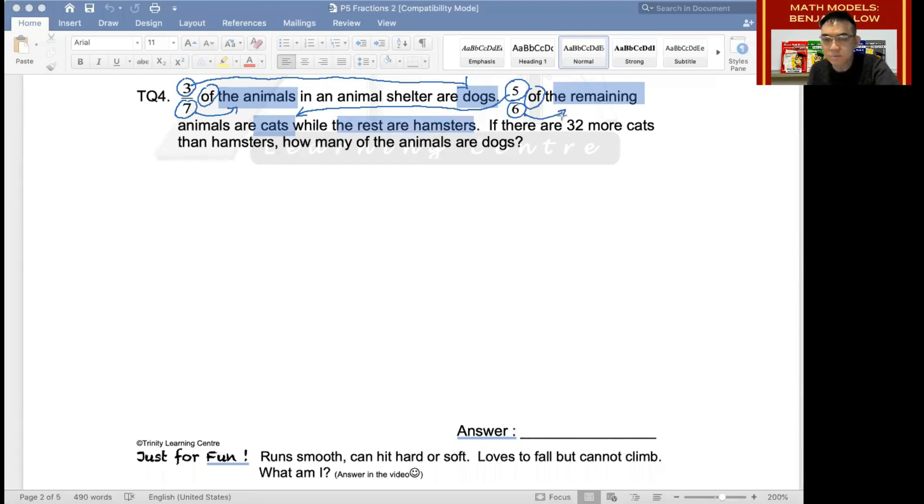Let's point that to the cats. And of course, we have to highlight that the rest are hamsters. All right, what's the next keyword? 32 more cats than hamsters? Question, how many dogs? All right, so now I'm going to begin with my model. Can you tell me how many units you will be drawing? Of course, we take the model from the beginning, which means that we will start by using the seven here.